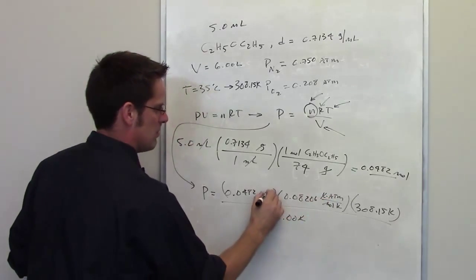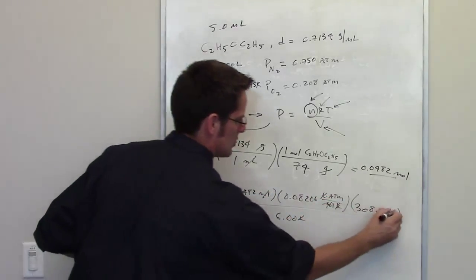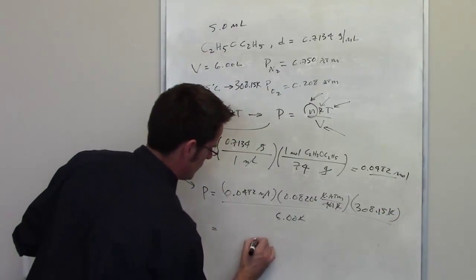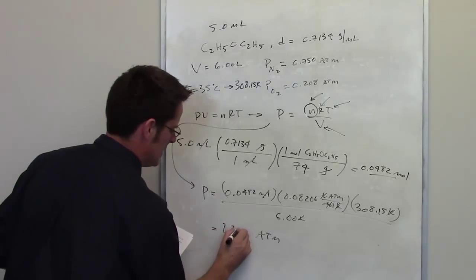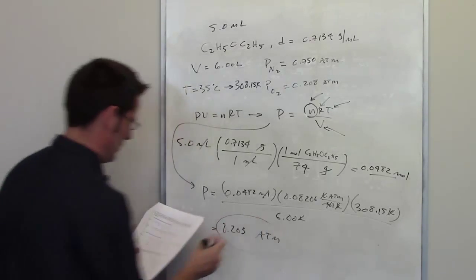The liters cancel each other out, the moles cancel each other out, the kelvins cancel each other out. I'm left with the units of atmosphere which is what I'm looking for. When I throw that into my calculator I end up getting 0.203 total atmospheres for diethyl ether.